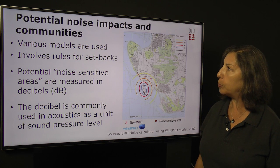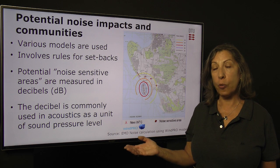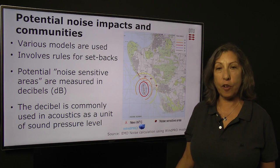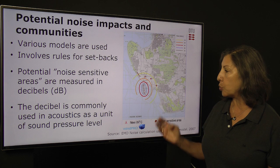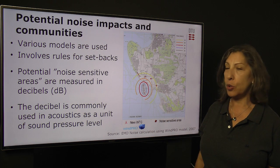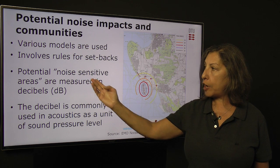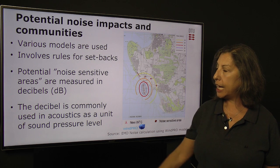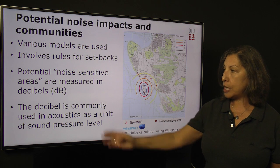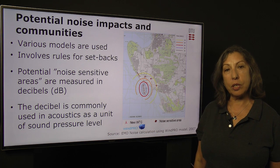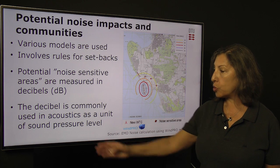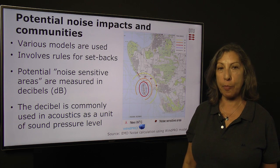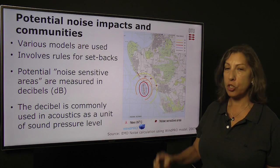Let me give you one example: potential noise impacts in communities, which could be related to siting an offshore wind site or land-based wind. It involves various models and sets rules for the distance between the wind turbine and the first communities that are affected. They identify potential noise-sensitive areas, which are shown as three dots in this particular example, and they're measured in decibels (dB). The decibel is a commonly used measurement in acoustics and measures sound pressure levels. This result of the model is used to assess the offshore impact to land-based communities.